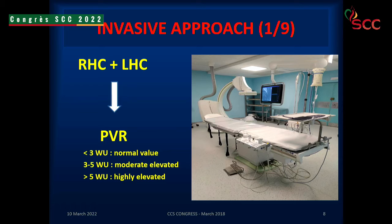At catheterization, what answer are we giving to the surgeon? Pulmonary vascular resistance less than 3 Wood units is the normal value. From 3 to 5 Wood units is moderately elevated, and more than 5 Wood units is highly elevated. Patients in the 3 to 5 and above range are borderline for either percutaneous closure or surgical closure.